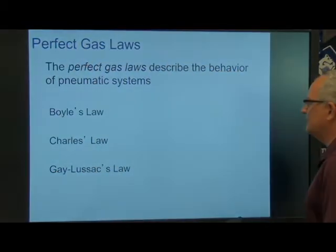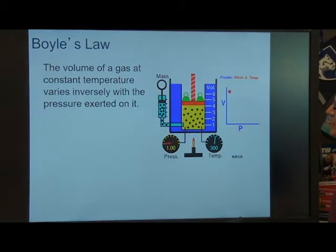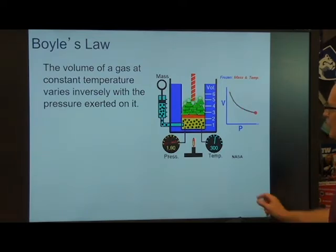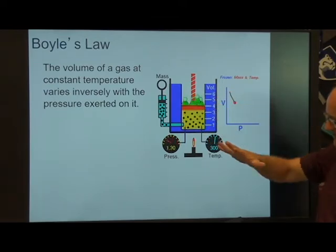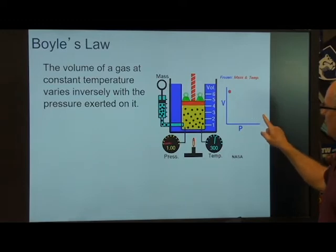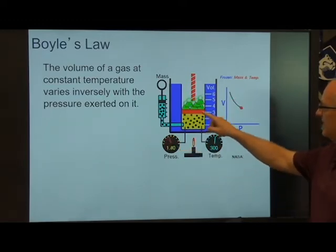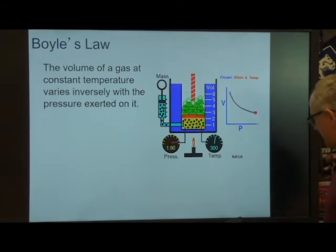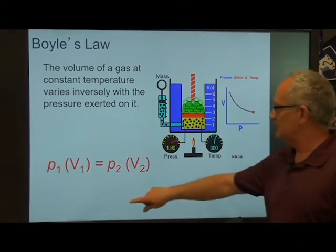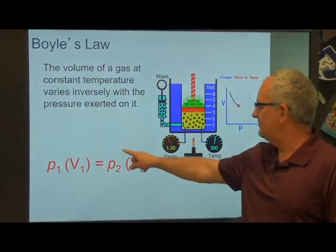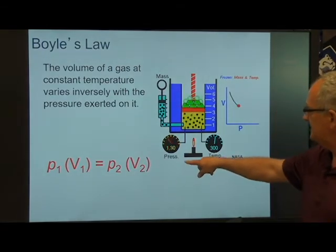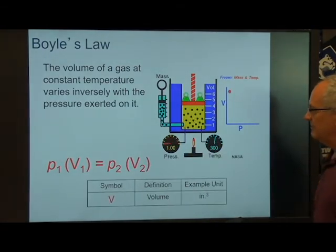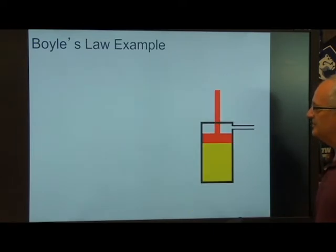Boyle's Law says the volume of a gas at a constant temperature varies inversely with the pressure exerted on it. As we take this cylinder and fill it with gas and compress it, you can see as the volume decreases, the pressure goes up. The formula is written like this: the pressure at the first position times the volume at the first position equals the pressure at the second position times the volume at the second position. You'll always be given three of the four variables and simply have to solve for the fourth.